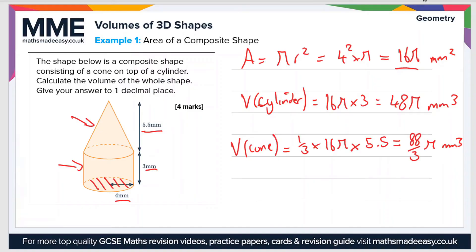So that's the volume of the cone, and then the total volume, call it V total, is just 48 pi, the volume of the cylinder, plus 88 over 3 pi, which is the volume of the cone. And if we plug all that into the calculator, it gives us a value of 242.9498, or to one decimal place, as the question asks for, that's 242.9, and then the units will be millimeters cubed.